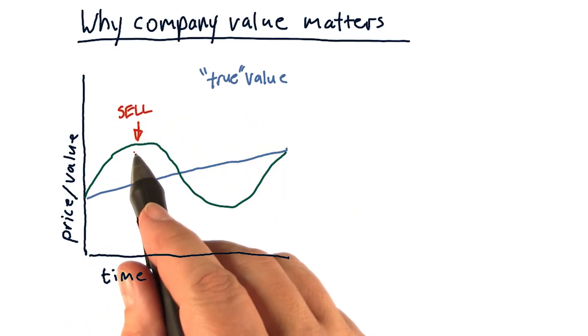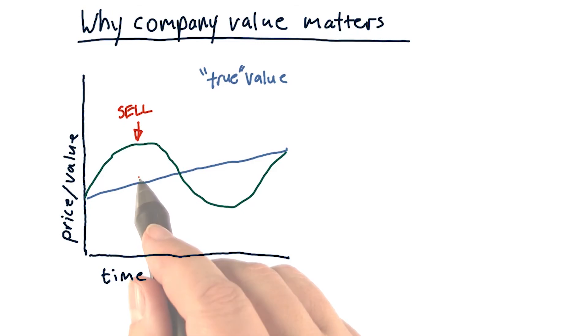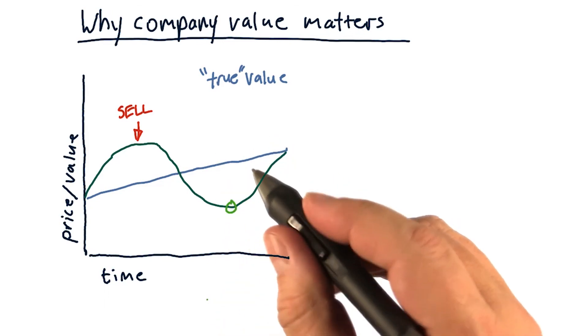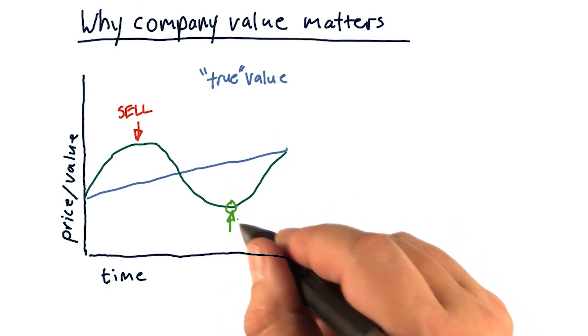In other words, if we see the price up here and we know the true value of the company is down here, sell it. Similarly, if we see the price really low compared to what the company is worth, that could represent a buying opportunity.